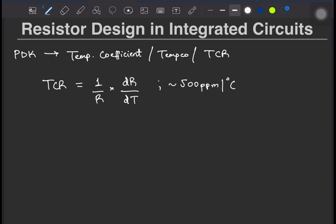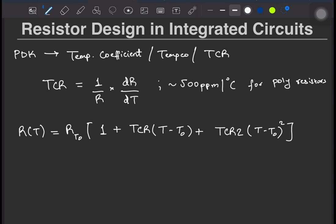In SPICE, the temperature variation of resistors is generally modeled as the nominal resistance at the nominal temperature times 1 plus the linear temperature dependence plus the quadratic temperature dependence. The nominal temperature is usually around 300 K and TCR2 in this figure is the quadratic temperature coefficient.